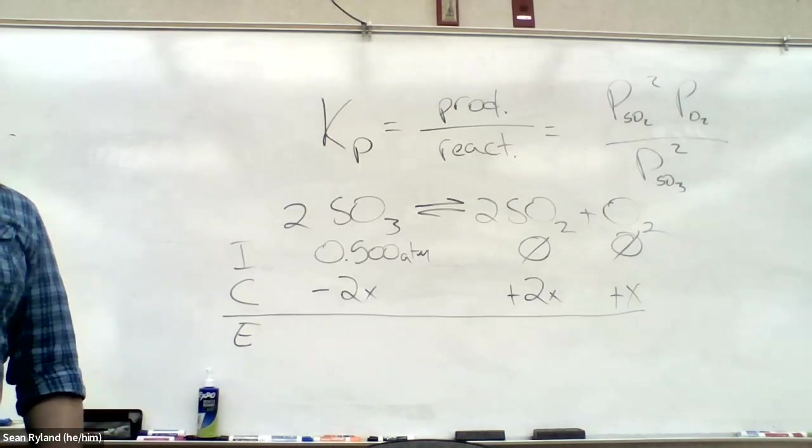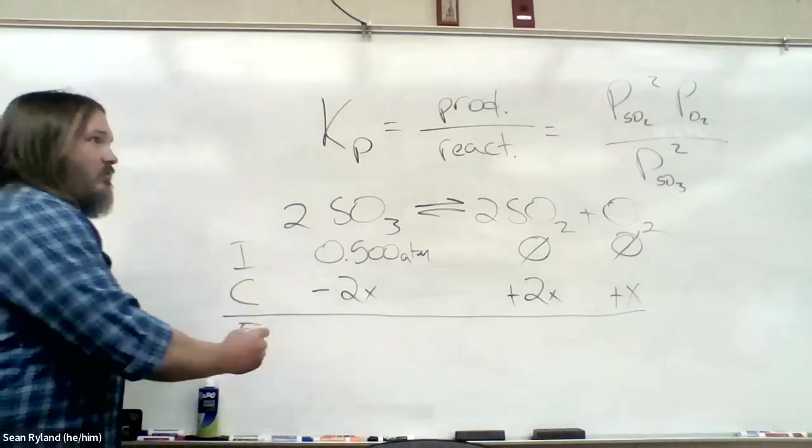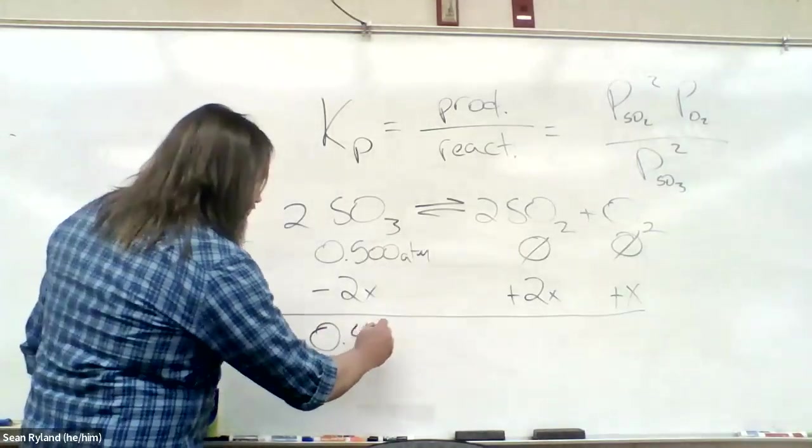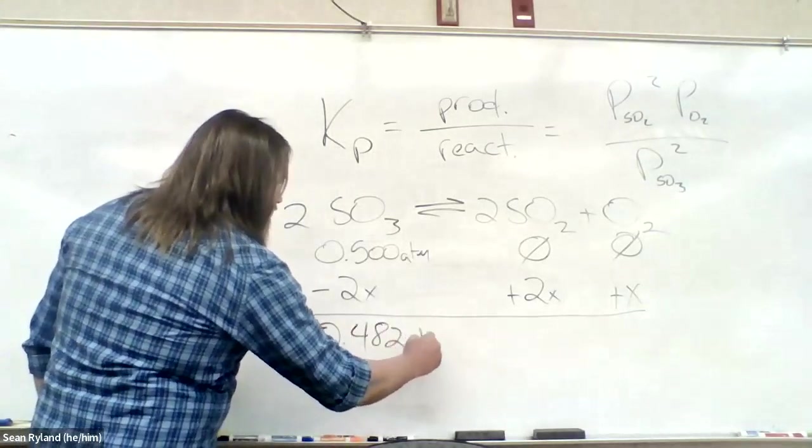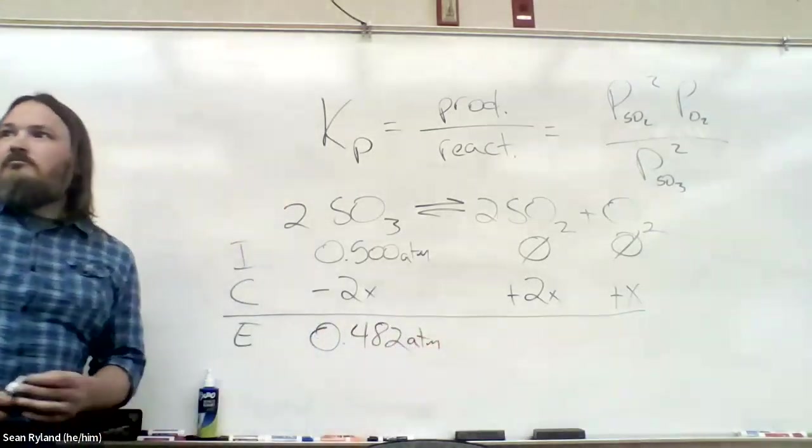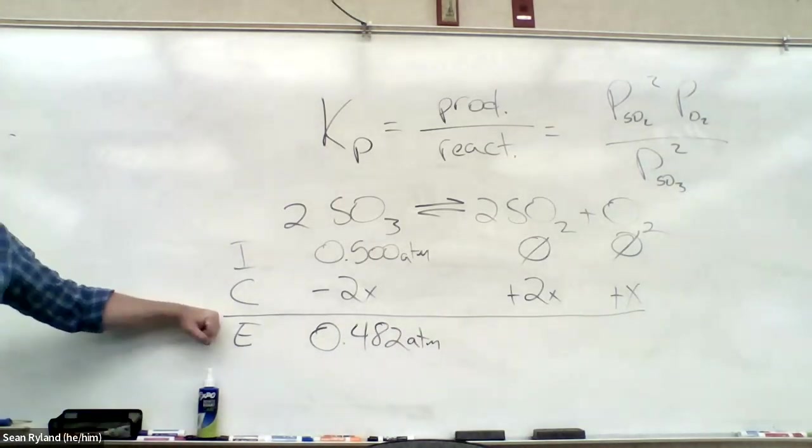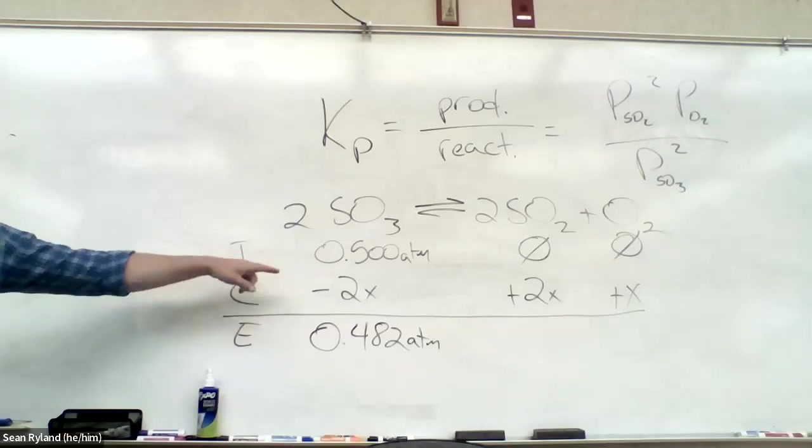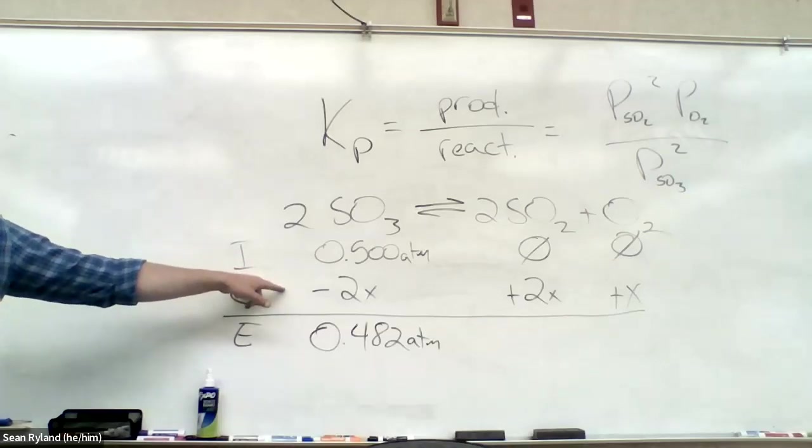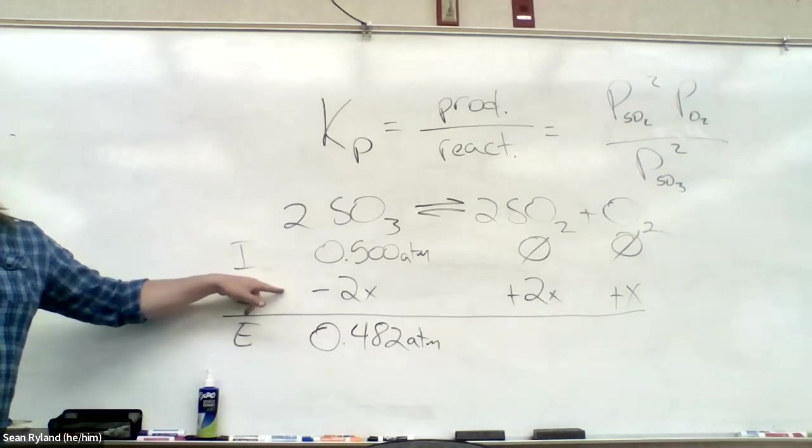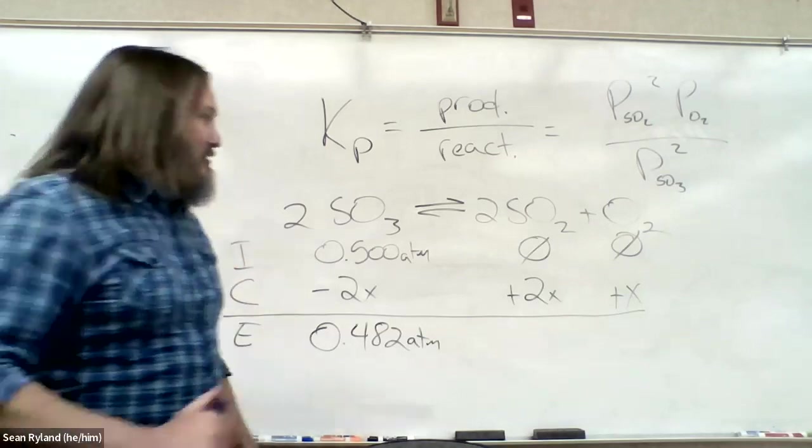We know the equilibrium concentration of something. We know this is 0.0482. So how do we finish the rest of it? How do we solve for X? Plug it in. It's usually the answer. But how?